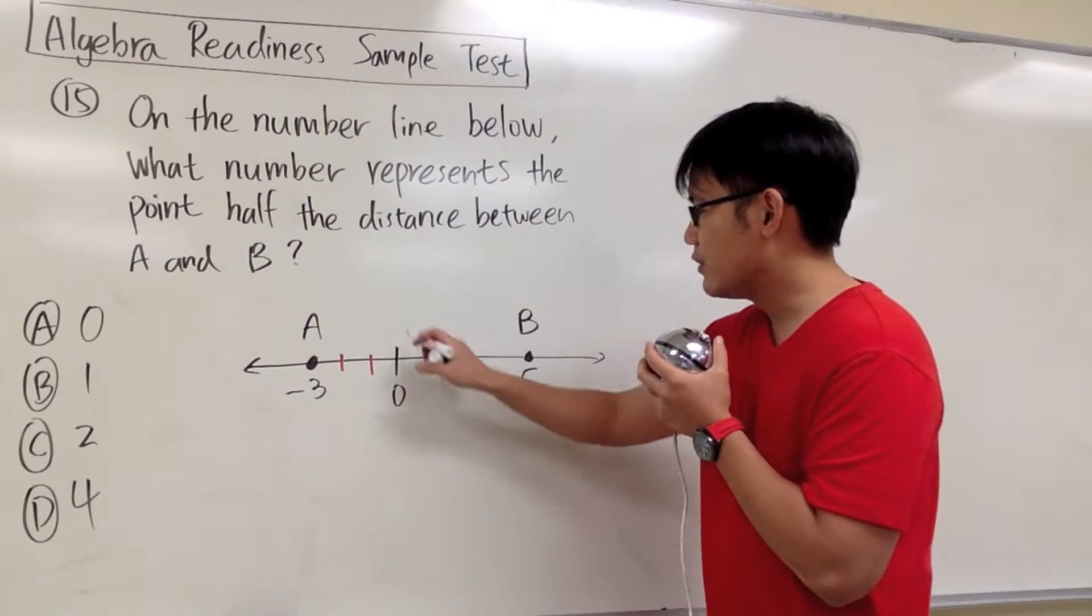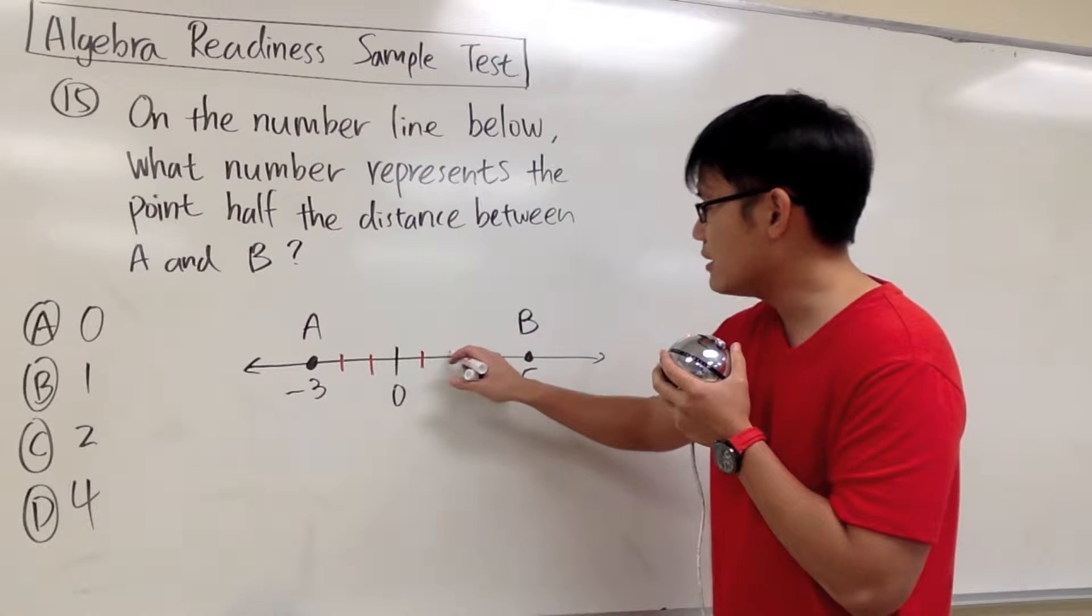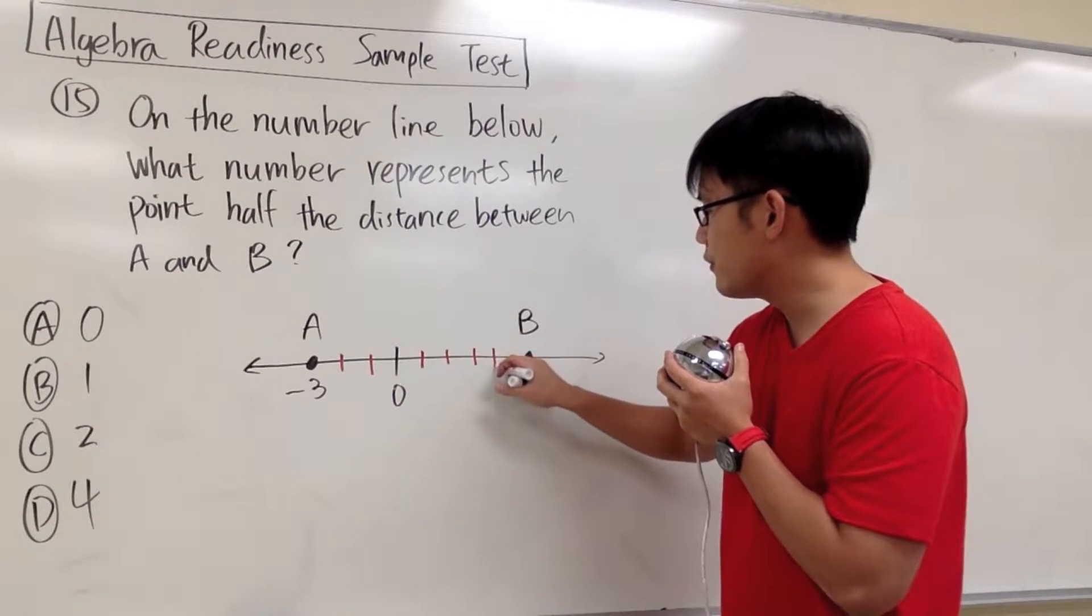And then we just count from 0, this is going to be 1, 2, 3, 4, 5. Alright,